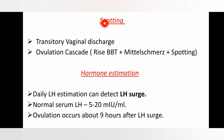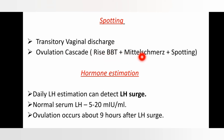The next indicator is spotting, defined as a transitory vaginal discharge. There is a term called ovulation cascade, which is a triad of three indicators: rise in basal body temperature, Mittelschmerz, and spotting. If all three are present — that is, if the ovulation cascade is present — this ensures the occurrence of ovulation.